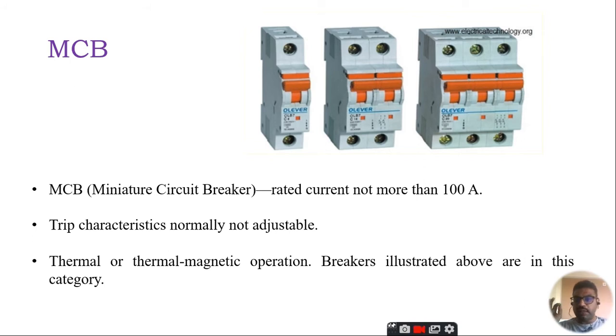They are typically rated up to 125 ampere, or nowadays low current capacity of 100 ampere and high current capacity up to 125 ampere. The tripping characteristic is normally not adjustable. Breakers illustrated above will be in this category.